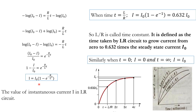Rearranging, the instantaneous current equation in an LR circuit is: I equals I₀·(1 minus e to the power minus R/L·t). This is the required equation. When t equals L/R, substituting gives I equals I₀·(1 minus e to the power minus 1), which equals approximately 0.632 times I₀.